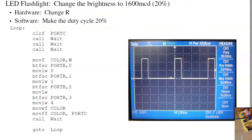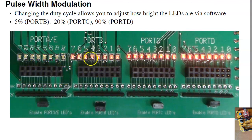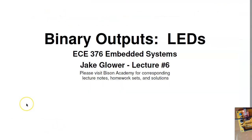Another homework project is to build an LED flashlight where push buttons vary how bright the LED is — each button varies the wait time to change the duty cycle. On your board, Port A is 0% on, Port B is 5% on, Port C is 20% on, and Port D is 90% on. The hardware hasn't changed — those resistors set the brightness when fully on — and the software varies the brightness using pulse width modulation. That concludes lecture number 6 for ECE 376, LEDs.